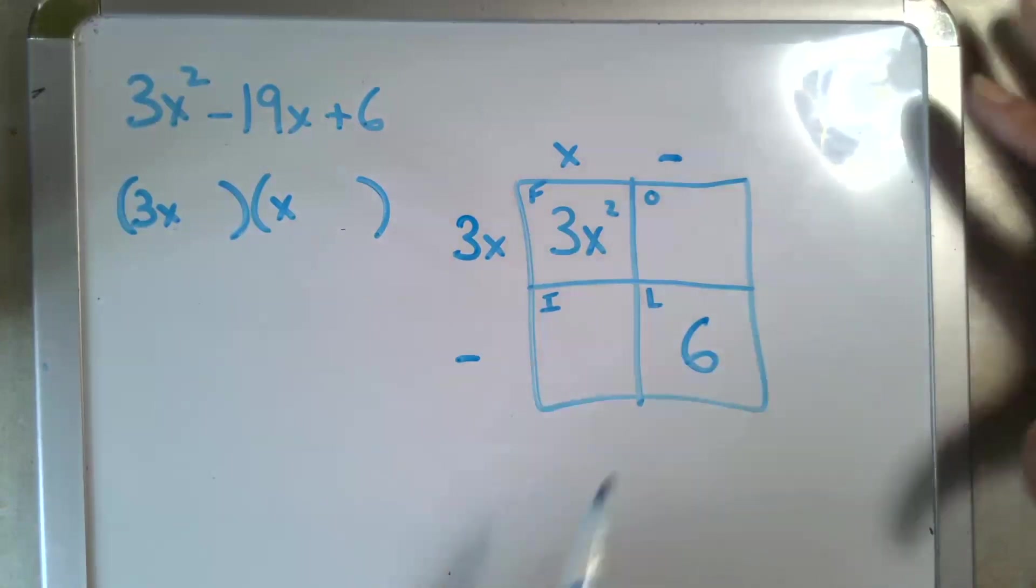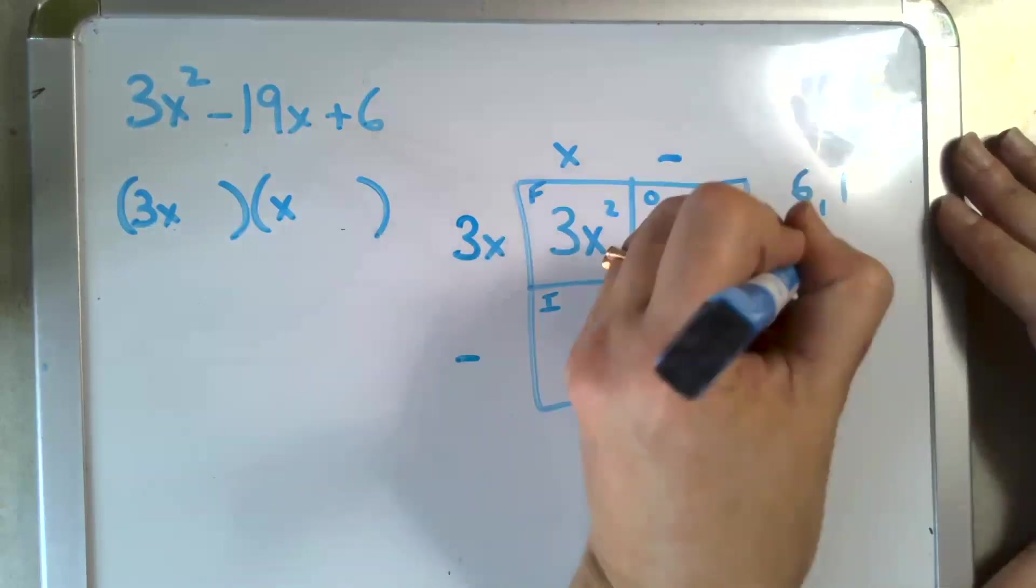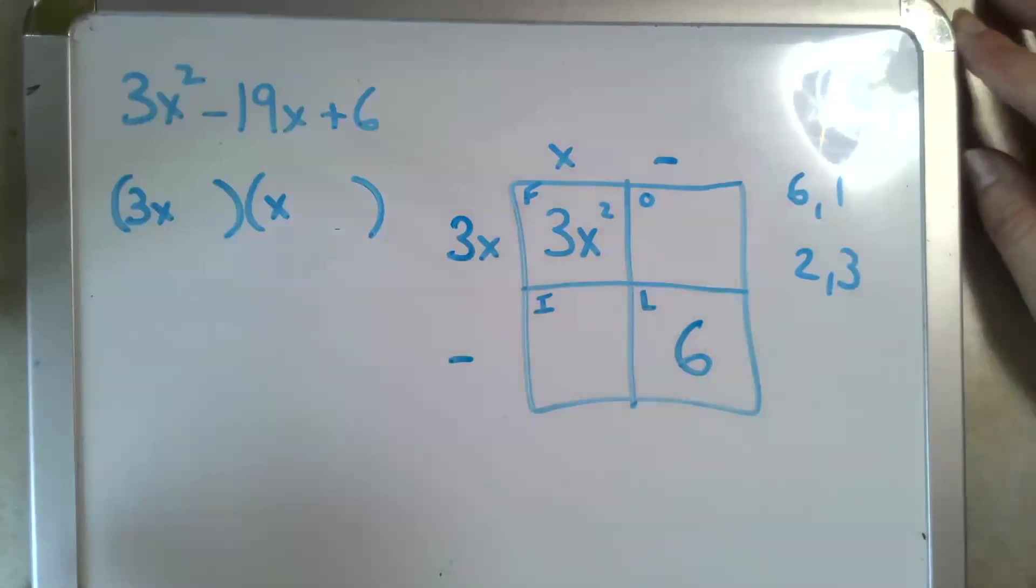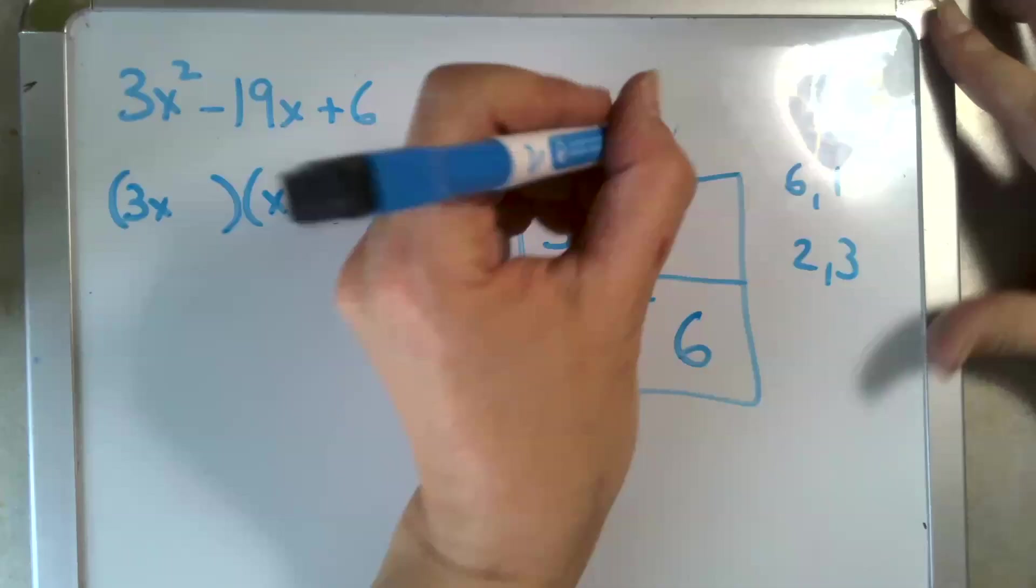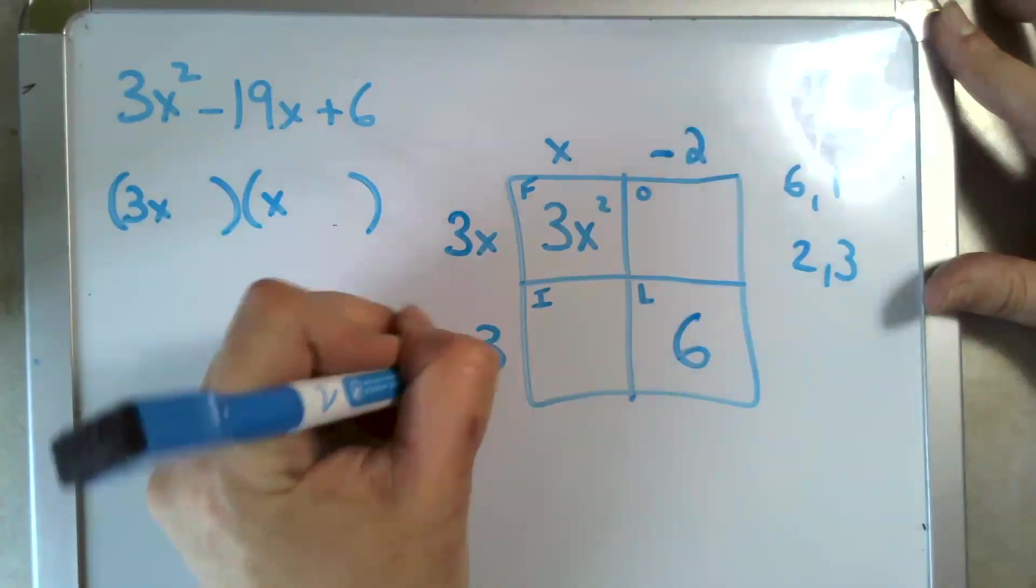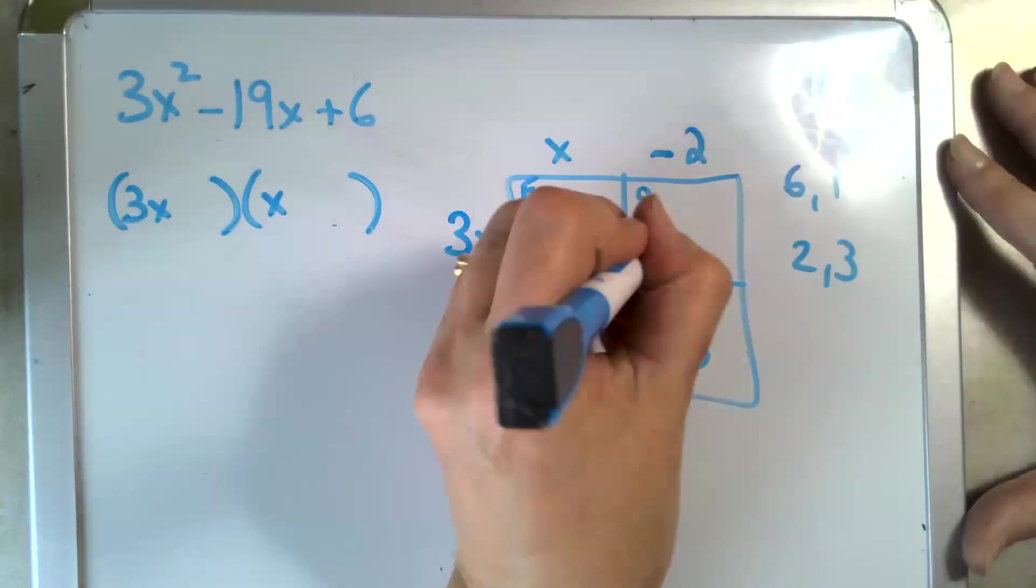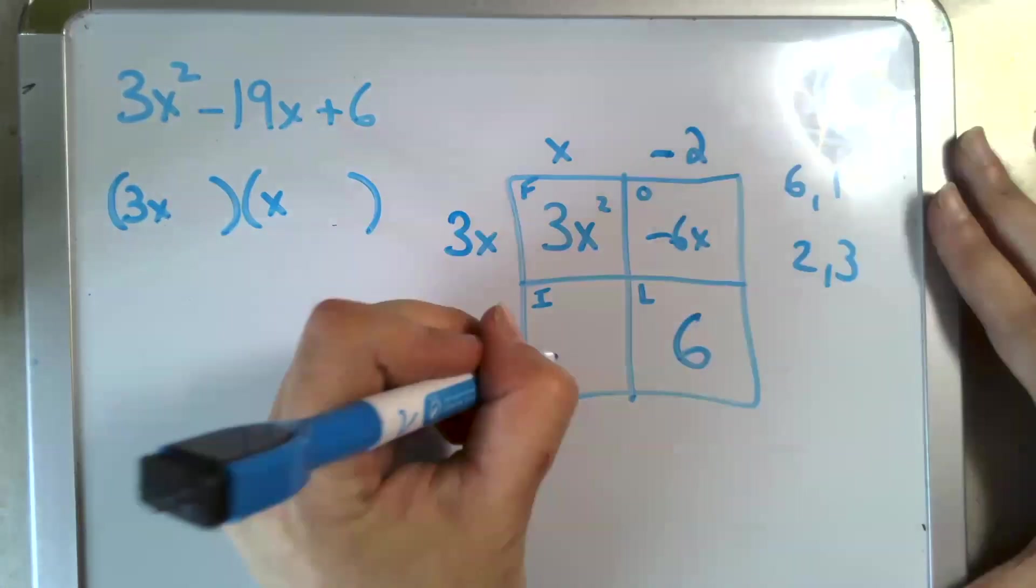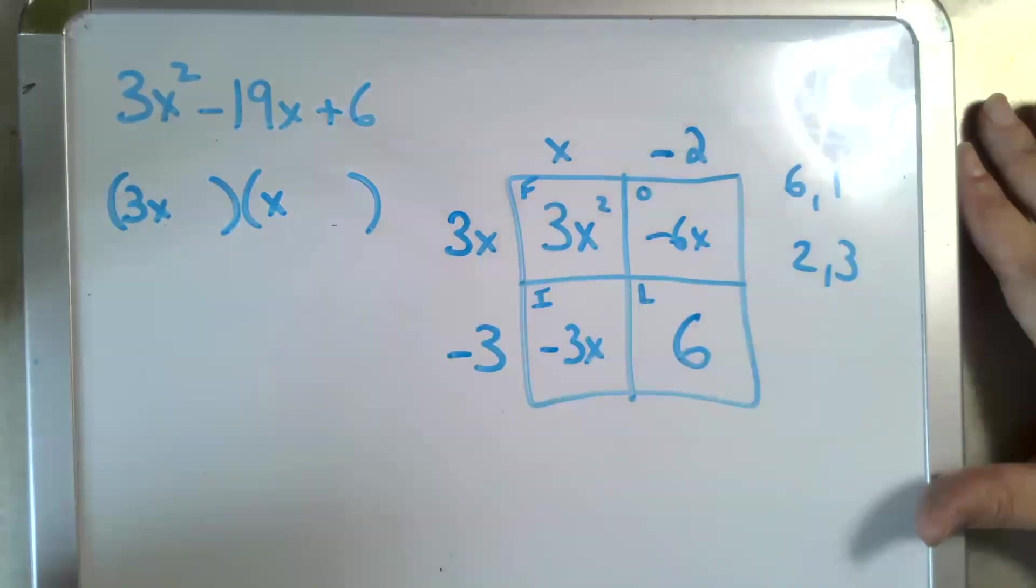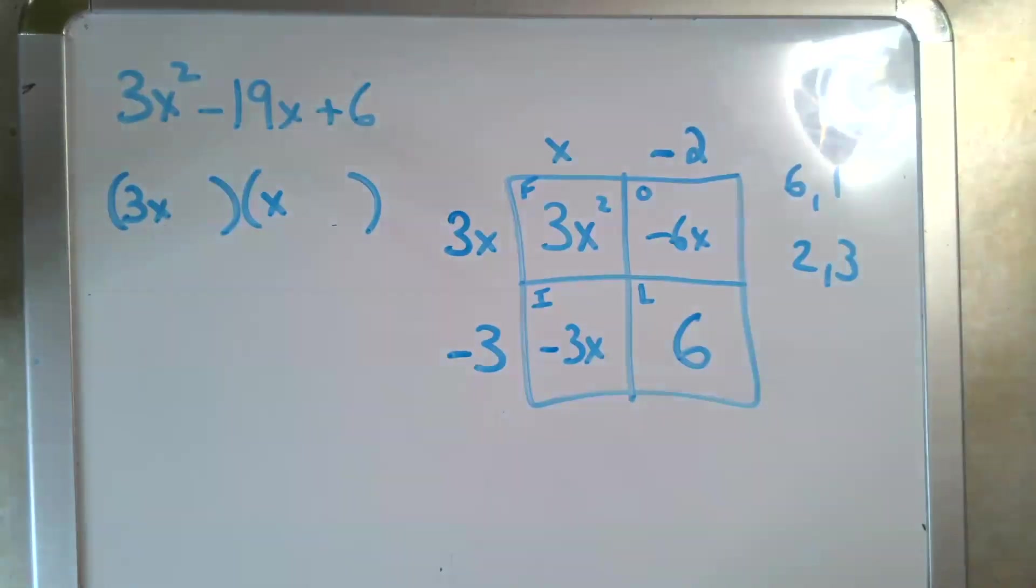How do we create 6 through multiplication? We could do 6 and 1, or 2 and 3. Here we'll do some trial and error. Let's try 2 and 3. 3x times -2 gets us -6x, and -3 times x gets us -3x. Negative 3x and negative 6x is -9x, not -19x. So we try again.